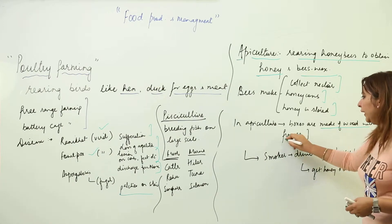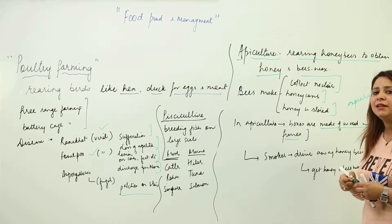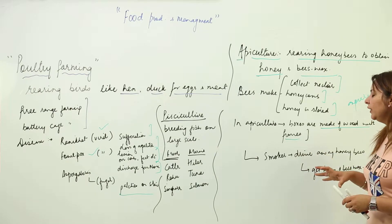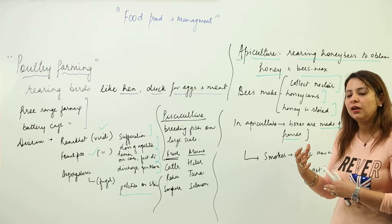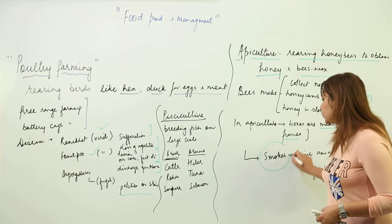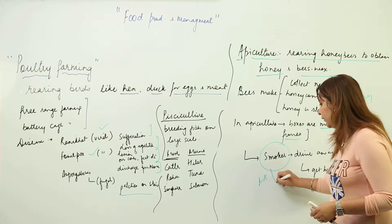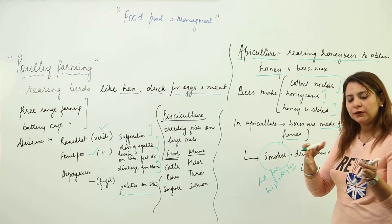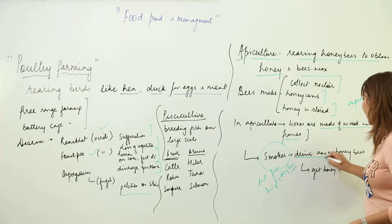In apiculture, there are certain wooden boxes with frames, and these boxes form an apiary. In the apiary, bees collect nectar and make honeycombs where honey is stored. When a person needs to collect honey and beeswax from the apiary, they use a method involving a smoker — a box where they light fire to twigs and dry leaves. They then move the smoker towards the honeycomb or apiary, which drives away the honeybees.